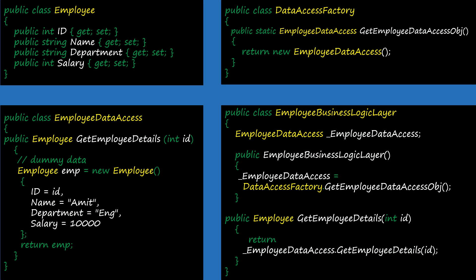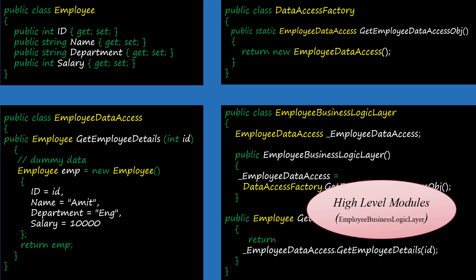Let's get back to the confusing terms from the definition. In this sample project, the high-level class or module is EmployeeBusinessLogicLayer — because, as per the Dependency Inversion Principle, a high-level class is one that depends on other low-level classes. Here, EmployeeBusinessLogicLayer is dependent on both DataAccessFactory and EmployeeDataAccess. Anything breaking those classes will impact EmployeeBusinessLogicLayer. The low-level class is EmployeeDataAccess, as it is not dependent on other classes.